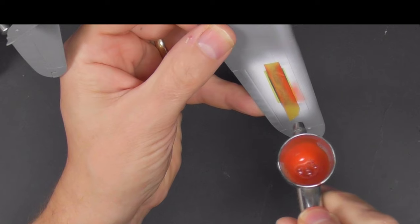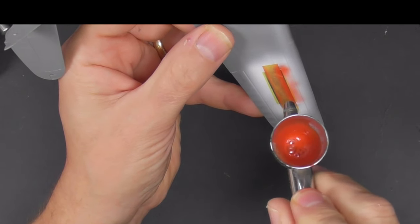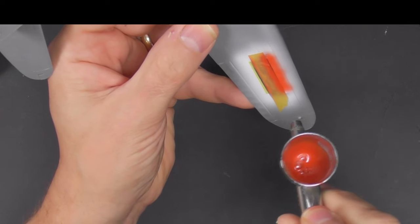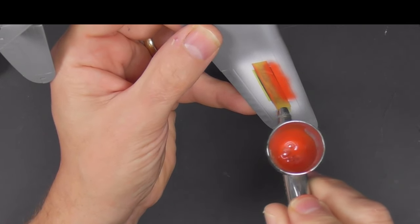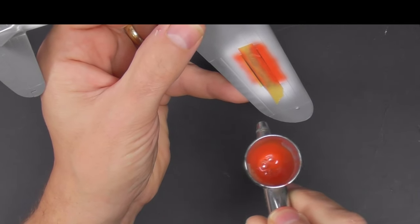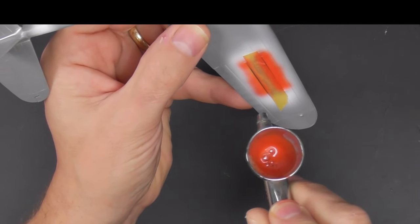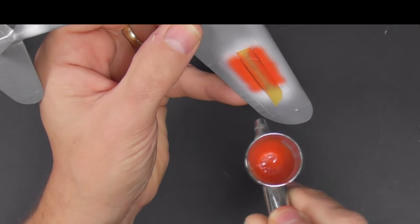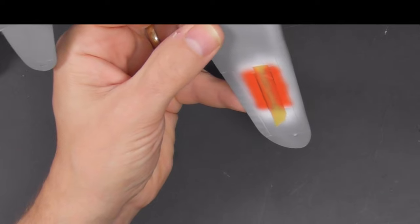Now for the red—this is MRP just with a tiny bit of dark earth put in just to knock the brightness down. You can see there, the blue's all been masked off, the white's all masked off, and we just go and apply the red.